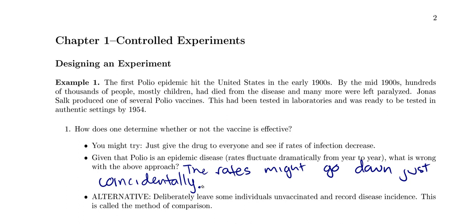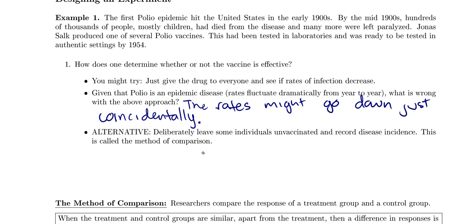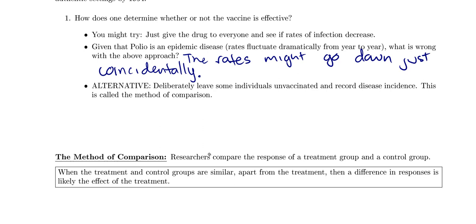For an alternative, you could deliberately leave some individuals unvaccinated and record the disease incidence — record how many of the unvaccinated people get polio and how many vaccinated people get polio. That's the method of comparison. Researchers compare the response of a treatment group and a control group. When the treatment and control groups are similar apart from the treatment, then a difference in response is likely the effect of the treatment.